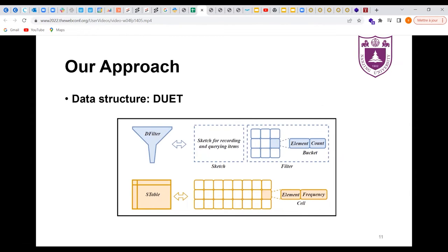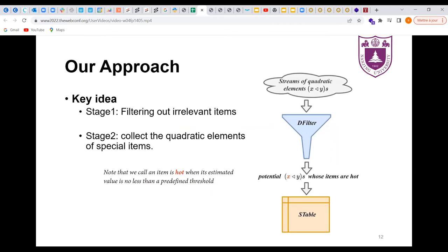Duet is a two-stage framework that consists of two data structures, XFilter and STable. The XFilter consists of two parts. One is a sketch, for example, count sketch for items. The other is a filter consisting of d arrays. For each array, there are w buckets and each of them is divided into two parts, element and counter. STable offers L rows and M columns of cells, each of which contains two parts, element and counter. The key idea of Duet is shown in the figure, which is to filter out irrelevant items first and then collect the quadratic elements of special items. Note that we call an item hot when its estimated value is no less than a predefined threshold.